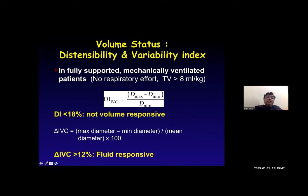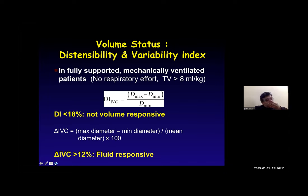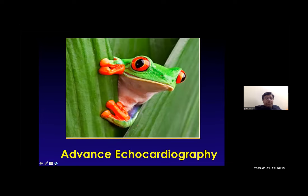For volume status in a fully supported mechanically ventilated patient with no respiratory effort and a tidal volume greater than 8 ml/kg, the distensibility index (dIVC) is: D-max minus D-min divided by D-min. A distensibility index of less than 18 percent means the patient will not be volume responsive; if IVC variability is greater than 12 percent, the patient will be fluid responsive. We have covered basic echo, the three windows and five views, and IVC assessment for fluid responsiveness.